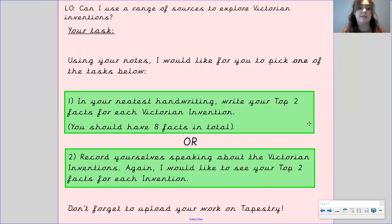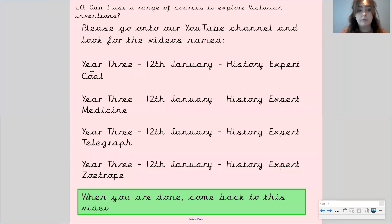Okay, so your task: using your notes, I want you to pick one of these tasks below. So task number one, in your neatest handwriting, I want you to write your top two facts for each Victorian invention, which means you will have eight facts in total. So I want two facts about the coal video, two facts about the medicine video, two facts about the telegraph, and two facts about the zootrope.